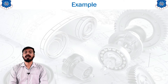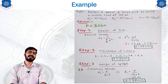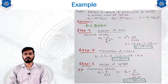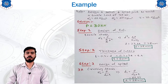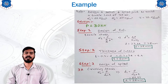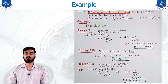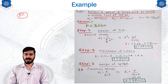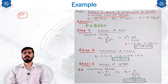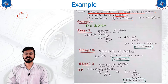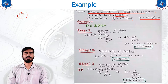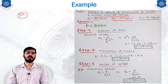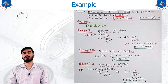The given data will be very simple in each and every example, and I will keep space for annotation and explanation. The given data indicates: design a socket and spigot joint to resist a tensile load of 30 kilonewton. So P is given. The material stresses are: σt = 50 N/mm², σc = 60 N/mm², and τ = 35 N/mm². Three different stresses are provided in the given data.